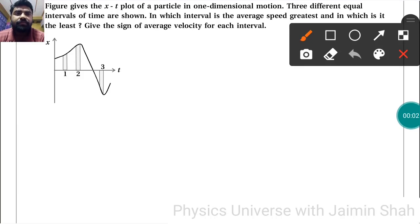The figure gives the x-t plot of a particle in one-dimensional motion. Three different equal intervals of time are shown. In which interval is the average speed greatest and in which is it the least? Give the sign of average velocity for each interval.